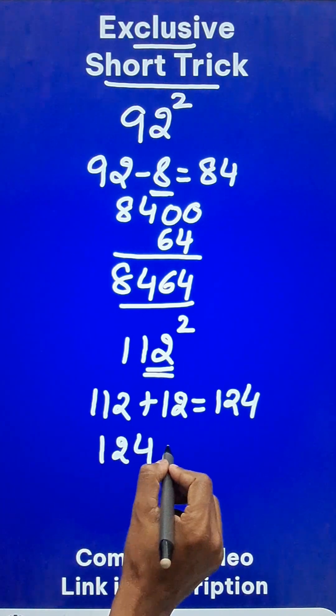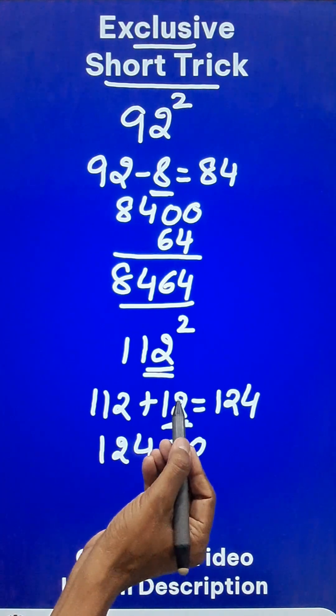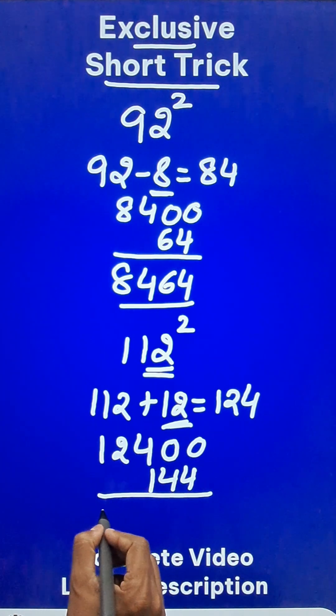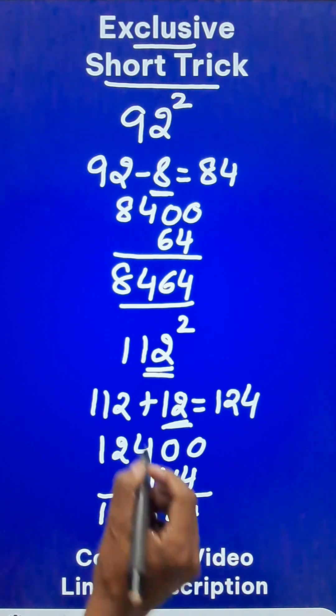124, we have to suffix two zeros and then how much was the excess? 12. 12 squared is 144. Just add these, you get 12544 as the square of 112.